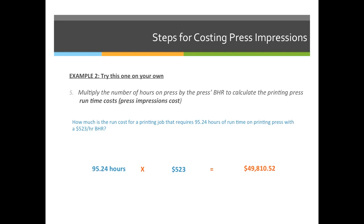The second example asks: how much is the run cost for a printing job that requires 95.24 hours of run time on a printing press with a budgeted hourly rate of $523 per hour? This one will cost a lot more because it's on press for a lot longer — almost an entire week. 95.24 hours times $523 per hour equals $49,810.52.